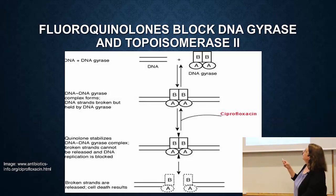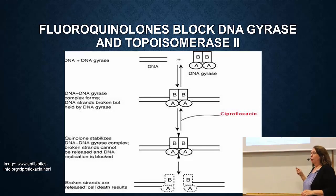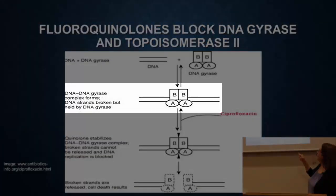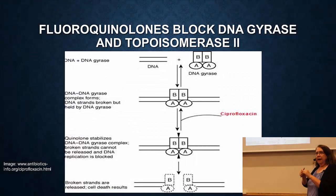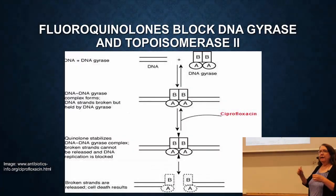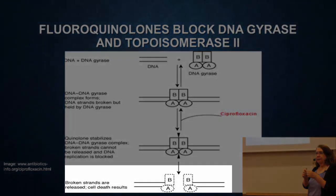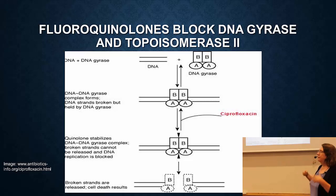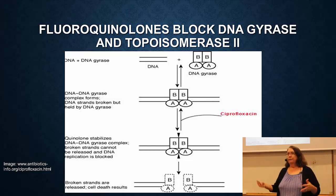One class of antibiotics is called fluoroquinolones. Fluoroquinolones act by blocking DNA gyrase or topoisomerase 2. Here is the DNA and here is DNA gyrase. DNA gyrase binds the DNA, and what it's supposed to do is cut, twist, and put it back together. It starts that process by cutting, but a fluoroquinolone like ciprofloxacin binds there and prevents it from putting the DNA strands back together. In the end, you get a double-stranded break in the cell's DNA, and this is usually lethal — the cell can no longer replicate and live.